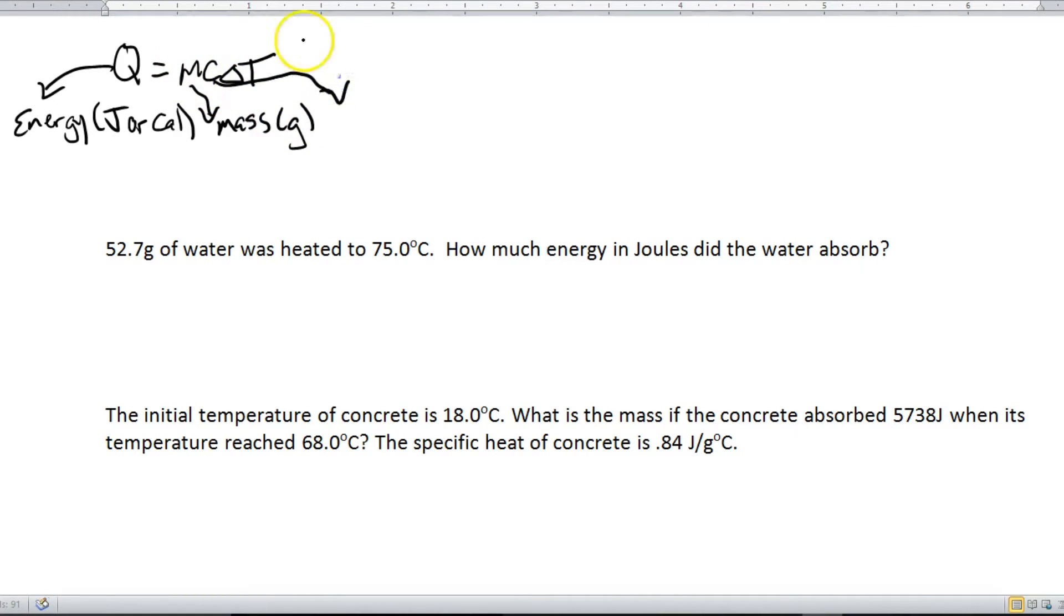C here, C stands for specific heat and specific heat has some strange units or strange looking units, I should say. They are joules per gram degrees Celsius or calories per gram degrees Celsius. Obviously depending on whether or not energy is joules or calories. So yeah, I know they look a little weird, but just go with me on it, that's exactly what they are. Okay, and then last but not least, we've got delta T, which is change in temperature measured in degrees Celsius. Okay, so that's what everything means.